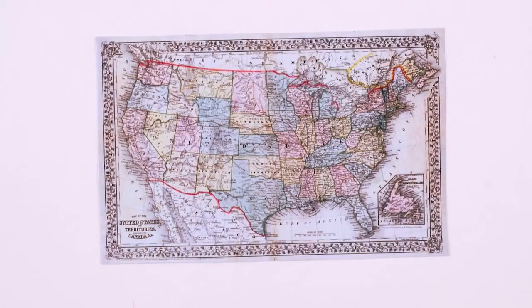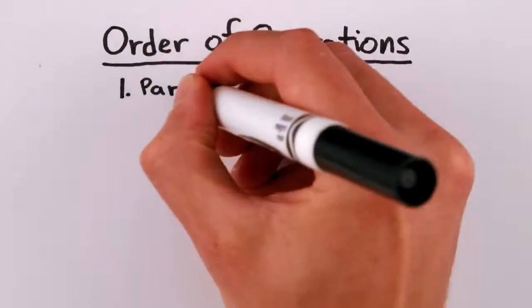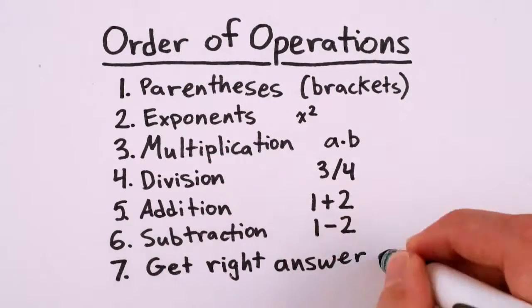If you went to elementary school in the US, or much of the rest of the world, you almost certainly learned about something boringly called the order of operations, a set of rules for whether or not you should do multiplication before addition or addition before subtraction to get the right answer on your math test.